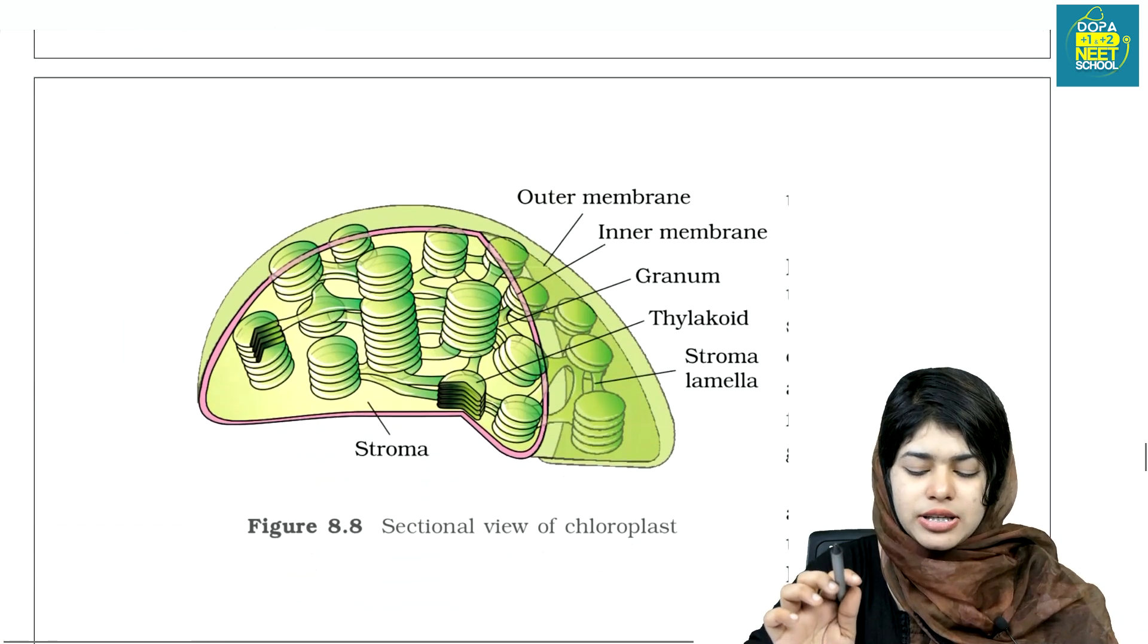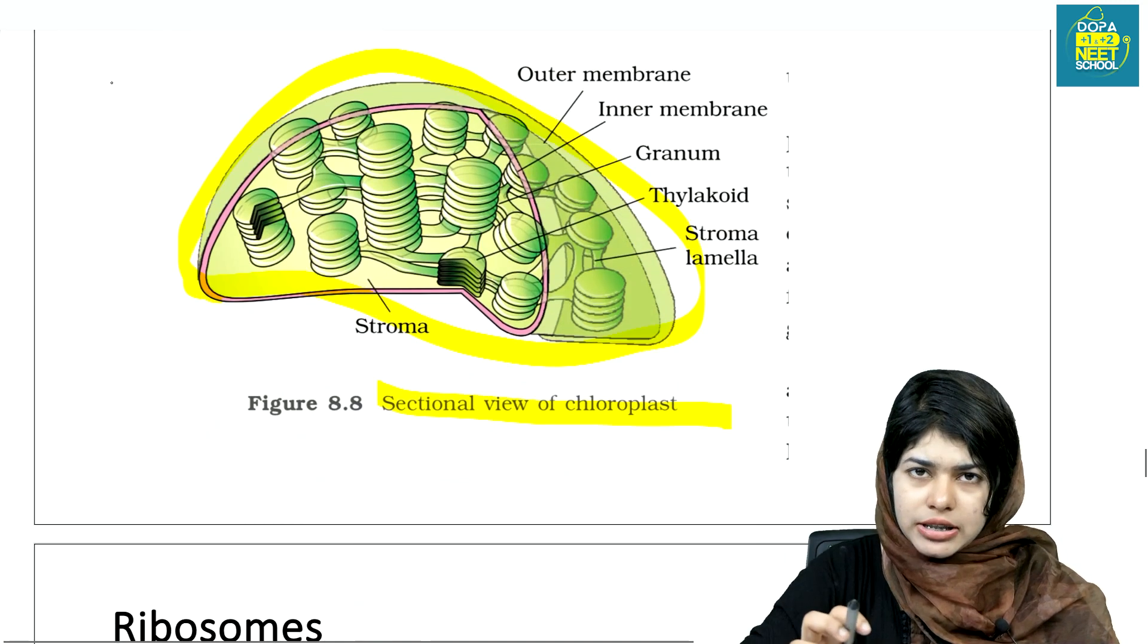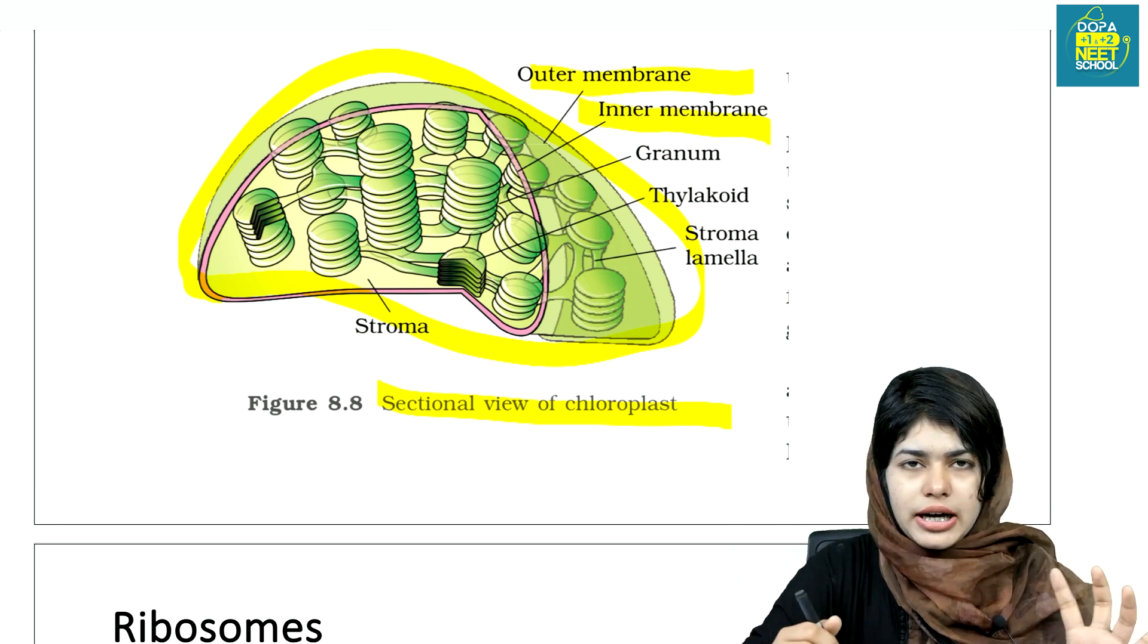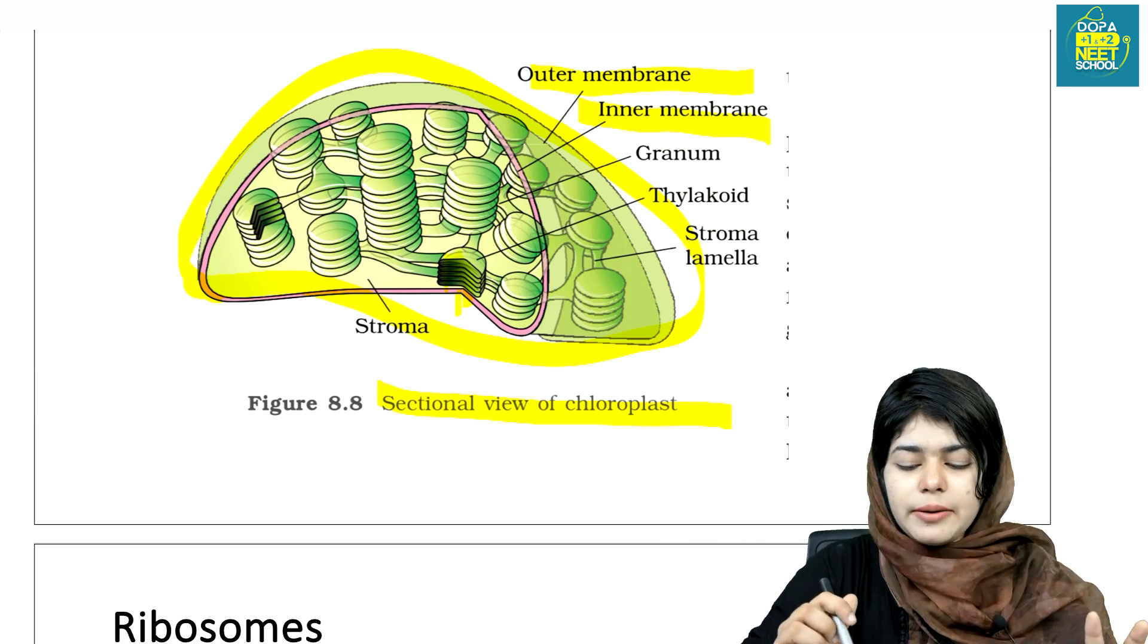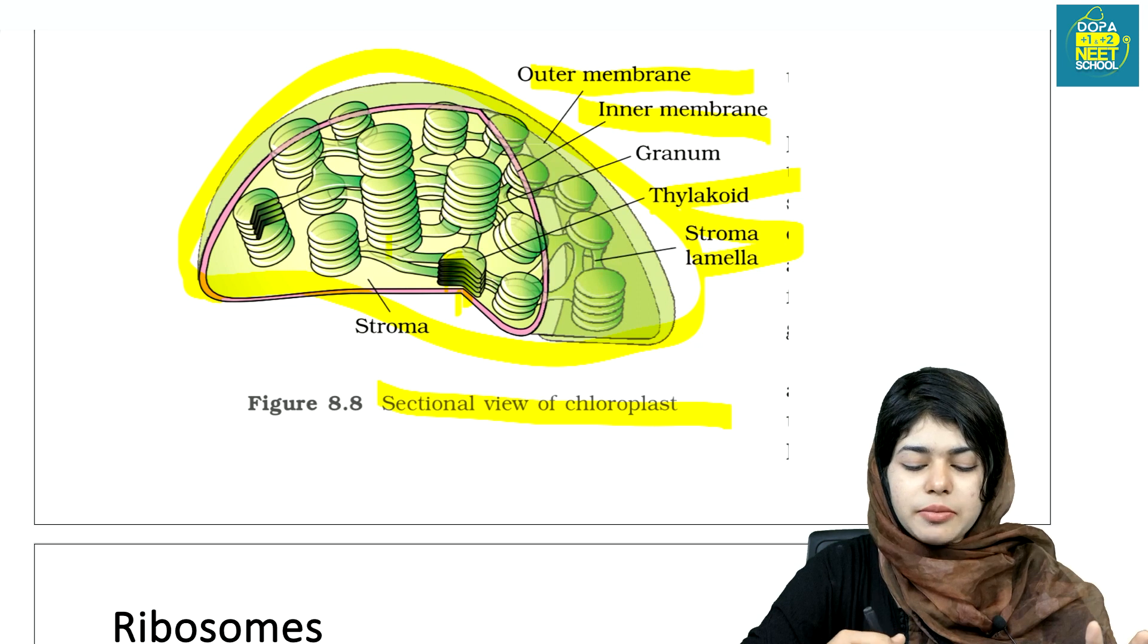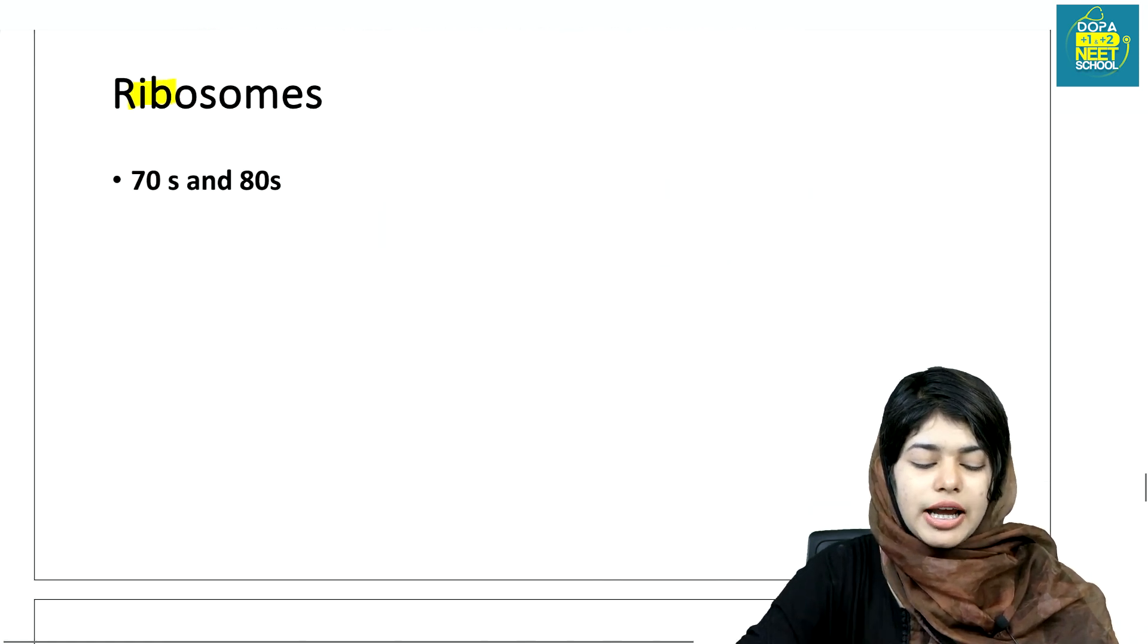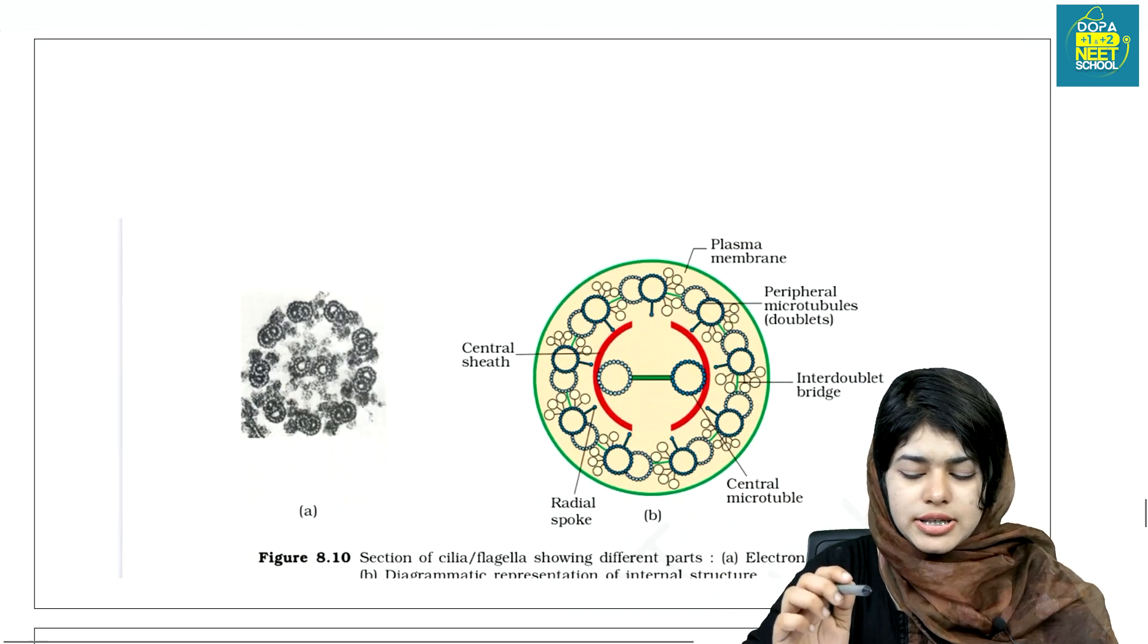That's important. There's a section view of chloroplast showing photosynthesis. There's outer membrane and inner membrane, grana, stroma, and stroma lamella. Ribosomes include 70S ribosome and 80S ribosome with different subunits.